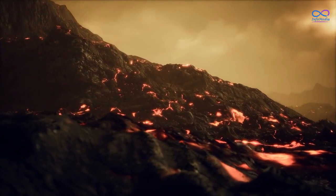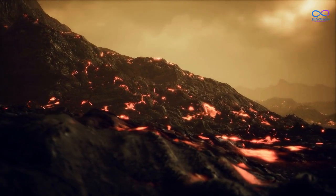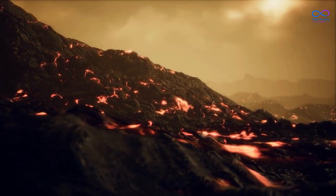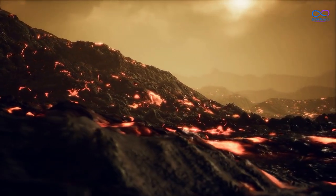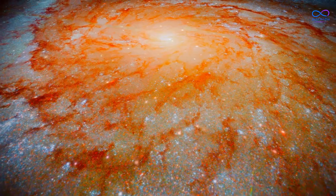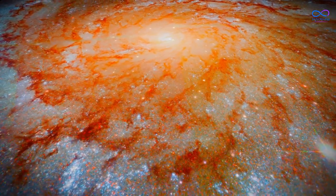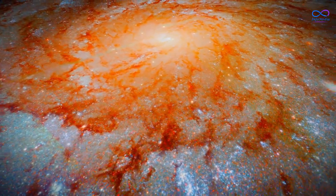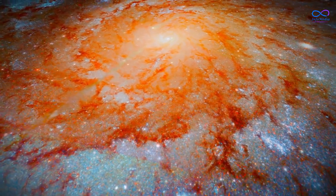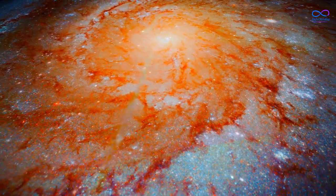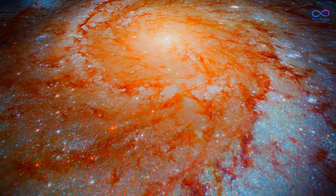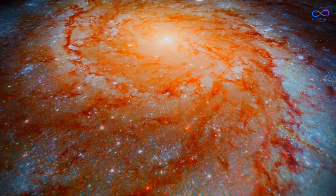HD 189733 b is not a habitable planet, as its high temperature and extreme weather conditions make it unsuitable for life as we know it. However, the study of planets like HD 189733 b can help us to better understand the processes that shape planetary atmospheres and climates and could potentially provide clues about the habitability of other worlds.